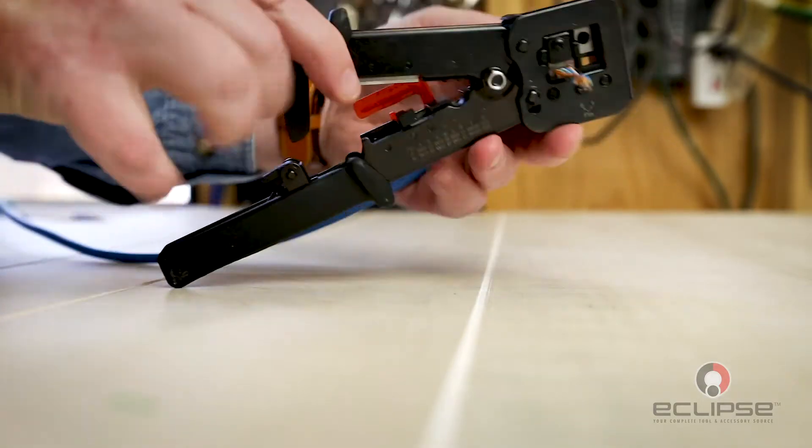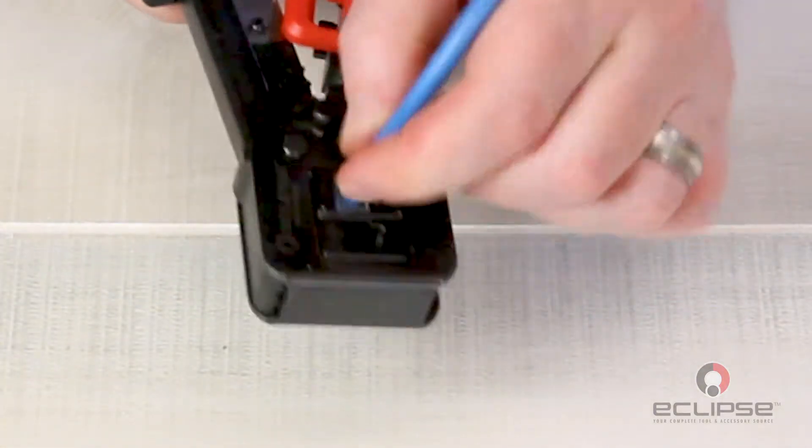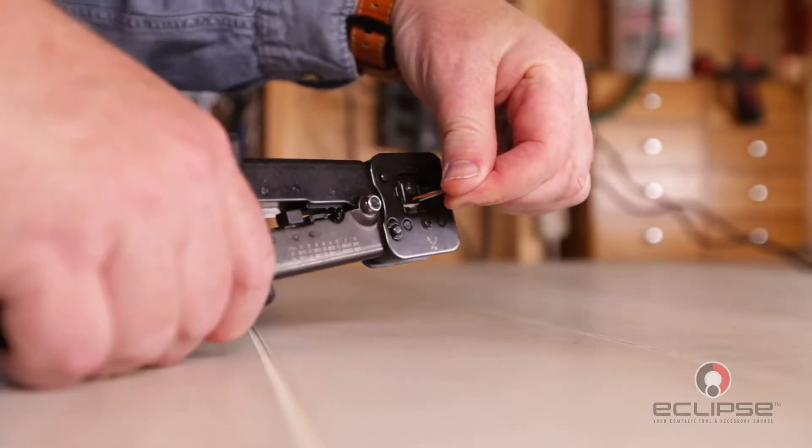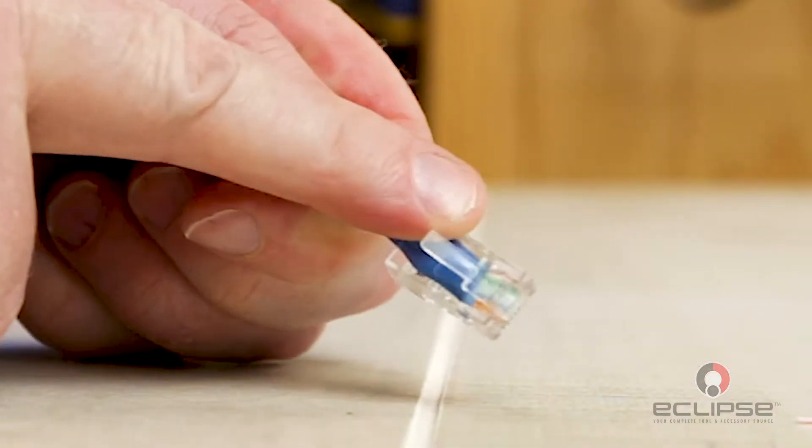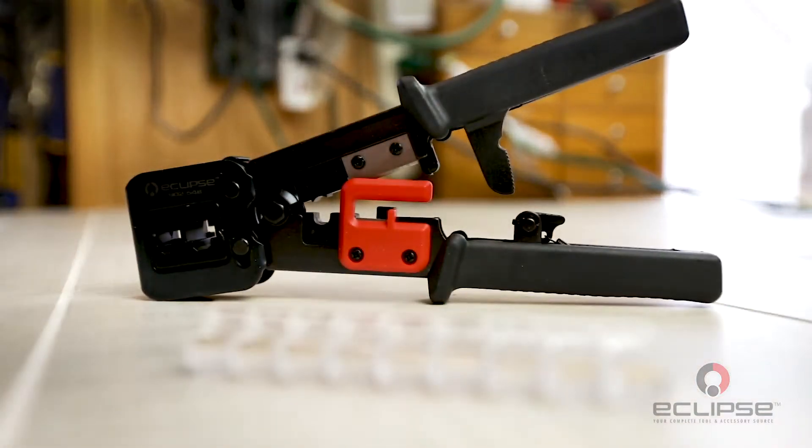Now it's time to crimp and trim your wires in one easy motion. In this video, we use the Quick Through crimp tool and Quick Through Cat 6 connectors.